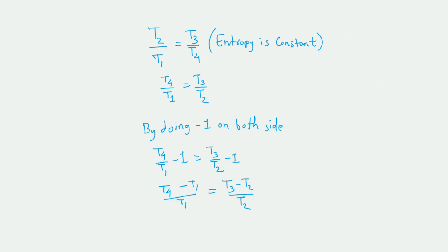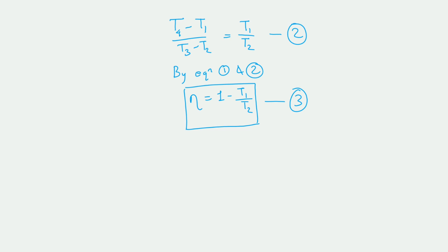Name this equation number 1. From the TS graph, the entropy is constant for the 1–2 and 3–4 processes, by which we can write T2/T1 = T3/T4. Rearranging: T4/T1 = T3/T2. Adding minus 1 on both sides: T4/T1 − 1 = T3/T2 − 1. Taking LCM and rearranging, we get (T4 − T1)/(T3 − T2) = T1/T2. Name this equation number 2.